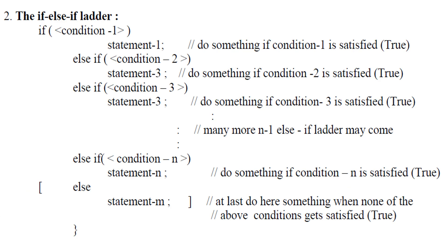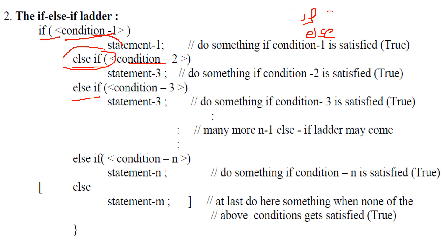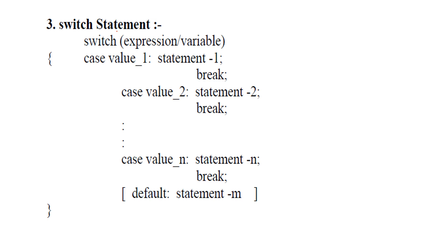The if-else-if ladder: if a condition is met, fine; if it doesn't meet, you check another condition; if those two don't meet, you check yet another condition. For this you use if-else-if. You write else if with a new condition, and you can chain as many as needed. Finally, you can optionally have a trailing else or omit it.